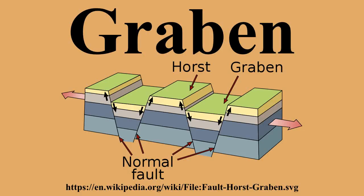Graben often occur side by side with Horsts. Horst and Graben structures indicate tensional forces and crustal stretching. Graben are produced from parallel normal faults, where the displacement of the hanging wall is downward, while that of the foot wall is upward. The faults typically dip toward the center of the Graben from both sides.